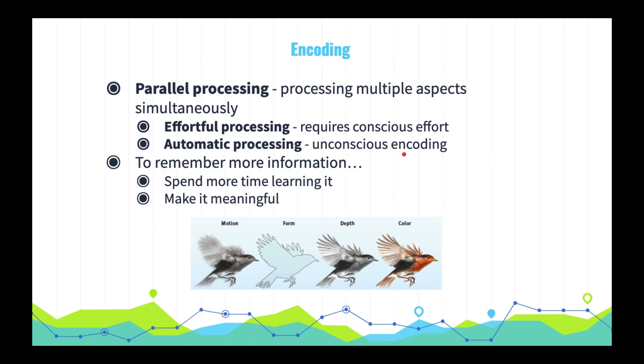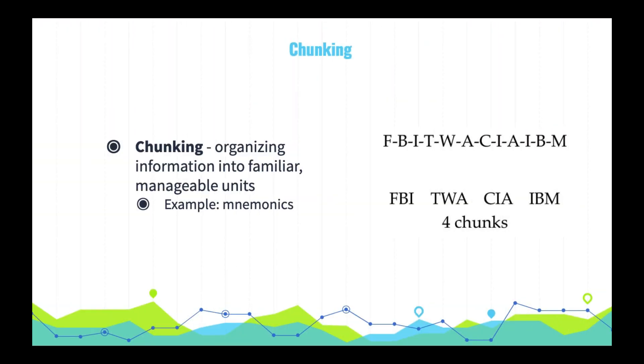The amount of information you remember depends on the time spent learning and on whether you made the information meaningful. For example, actors memorize large scripts by understanding the flow of meaning in their lines. Chunking — organizing information into familiar, manageable units — also helps with memory. Mnemonics are one form of chunking.